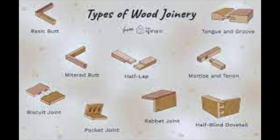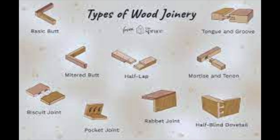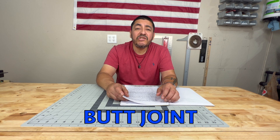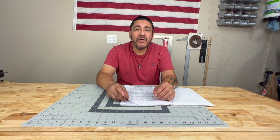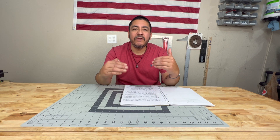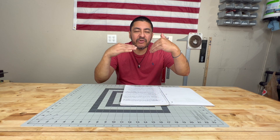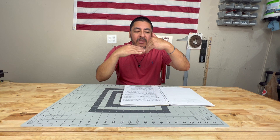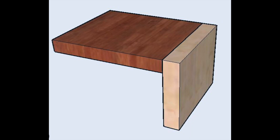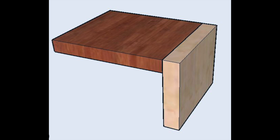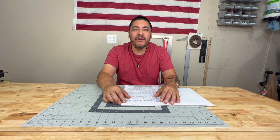Joinery. Joinery is the method of joining two pieces of wood together, and there are different types. Butt joint — a butt joint is the simplest way to join two pieces of wood: you just butt them up against each other and use either glue, fasteners, or both to join them.